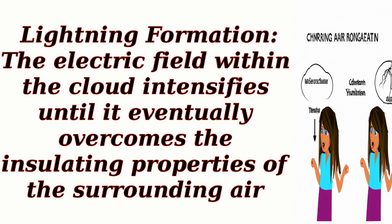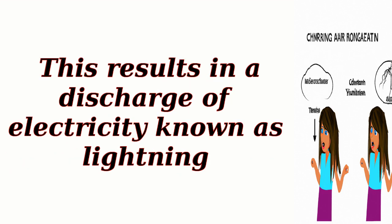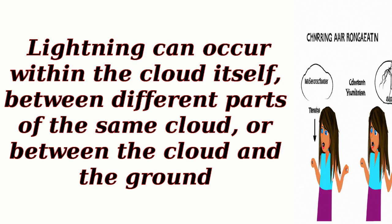Lightning Formation. The electric field within the cloud intensifies until it eventually overcomes the insulating properties of the surrounding air. This results in a discharge of electricity known as lightning. Lightning can occur within the cloud itself, between different parts of the same cloud, or between the cloud and the ground.